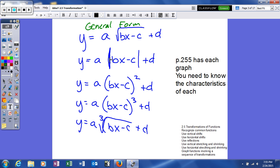This, as you can see, is absolute value. This is a quadratic, this is a cubic, and this is the cube root. You need to be very aware of this. Page 255 has each graph - it has seven different ones. It didn't list the constant function or the identity function.